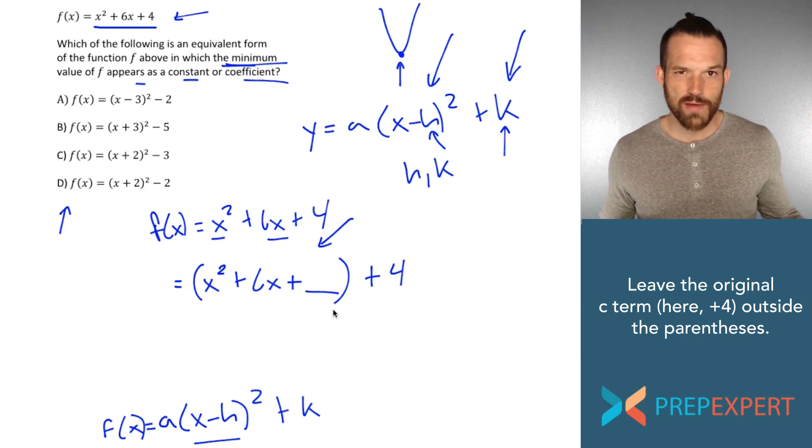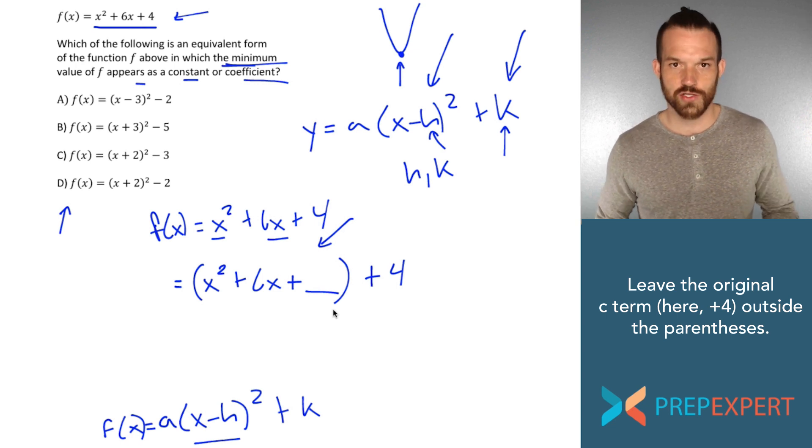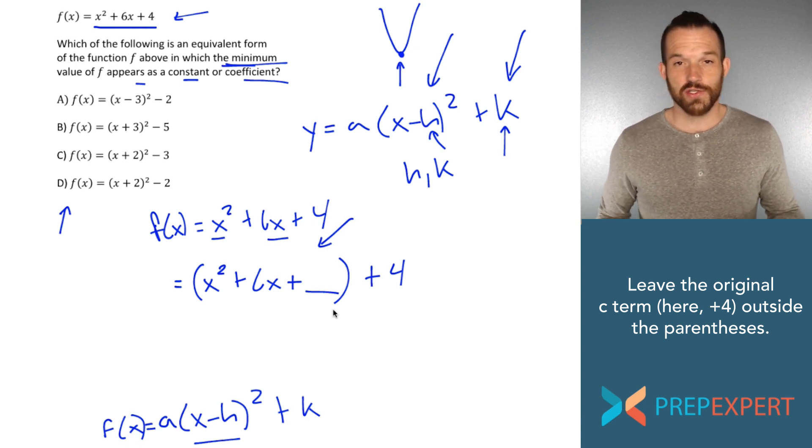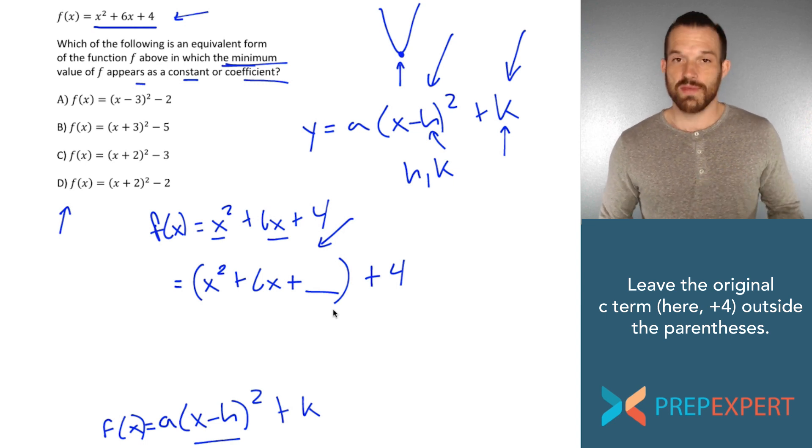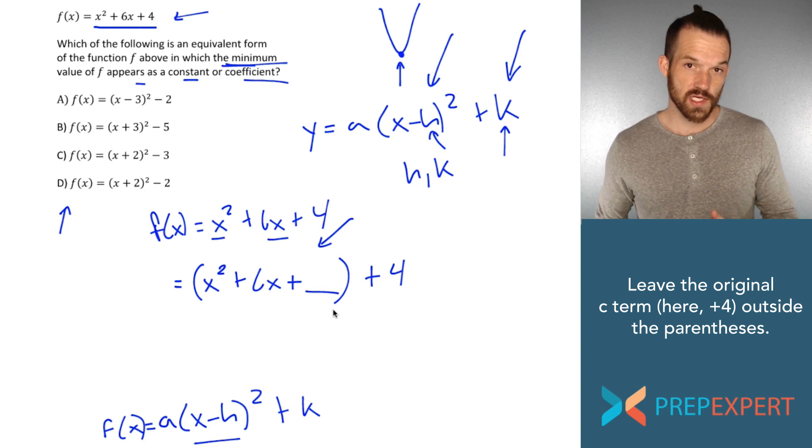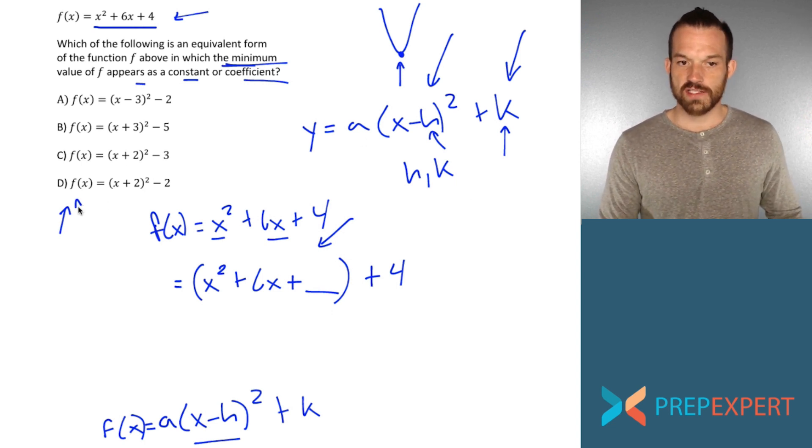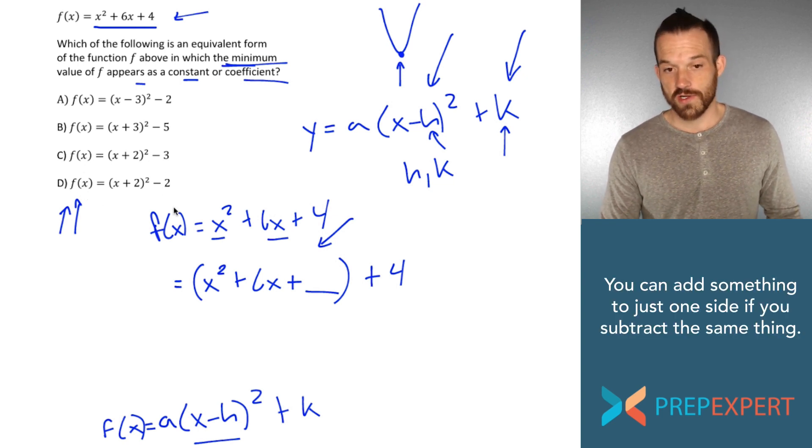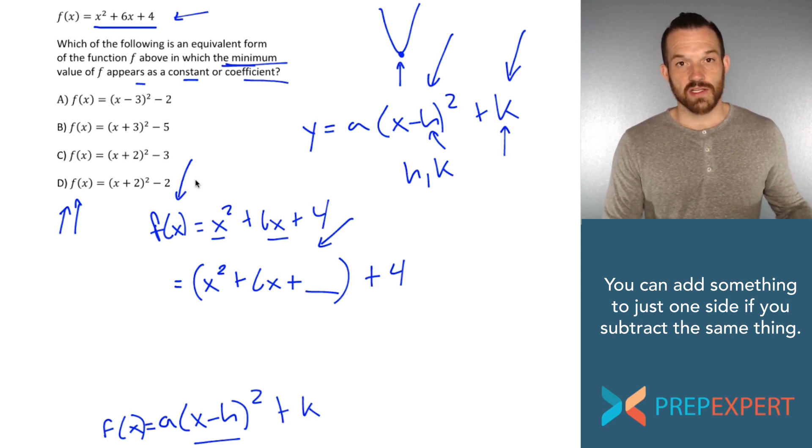Now, you might be thinking, how can I get away with adding a blank? Isn't that cheating? Aren't I changing the value of the function? And you are if that's all you do. But there are ways to counteract the blank that you're adding. You might be thinking, yeah, you can just add the same blank to the other side. But actually, that won't work here. Why not? Because look at our answer choices. All of our answer choices have only f(x) on the left side. In other words, we can't really get away with adding anything on the left side. We've got to leave it as just f(x). So if I can't add something on the left, how do I get away with adding it on the right?